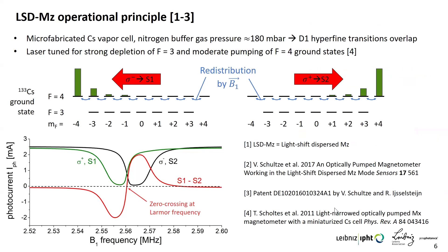We use our so-called LSD-MZ operational principle, which can be found in the literature. This uses a micro-fabricated vapor cell with a higher buffer gas pressure of about 180 millibars. As a consequence, the D1 hyperfine transitions overlap, and a single laser can couple to both ground states. The laser is tuned to couple strongly to the F=3 ground state, causing strong depletion, and also moderately to the F=4 ground state, shifting the population distribution towards the stretched states — to the right for sigma-plus and to the left for sigma-minus. This yields one transmission dip signal for each beam.